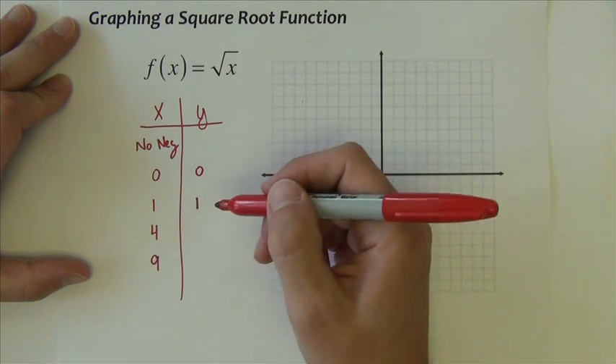Now, graphing a square root function, we can again make a table of values. In this table of values, we're going to have no negative numbers, because we can't square root the negative numbers. So I'd start at 0, 1, we can pick any numbers we want. I'm going to skip around, and it might be obvious to you why. So if I put 0 in, the square root of 0 is 0. Put 1 in, the square root of 1 is 1. I skip to 4, because the square root of 4 is 2. And I put 9 in, because the square root of 9 is 3.